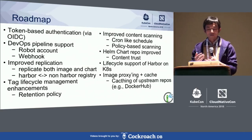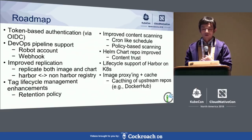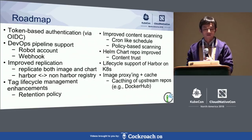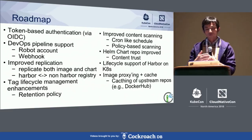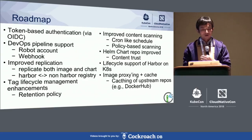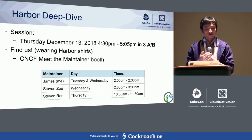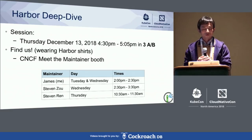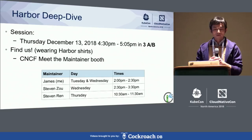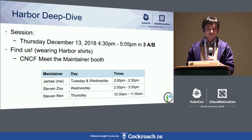The last roadmap item is image proxy and cache — Harbor can behave as a cache of an upstream registry, and we can also provide version control for cached images. If you have good suggestions or comments, you can go to our GitHub repository and file an issue. There is a Harbor deep-dive session on December 13th — welcome to join. We are also looking forward to your suggestions, and we have a maintainer booth here if you want to talk more. Thank you.